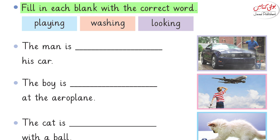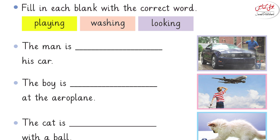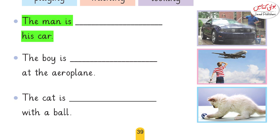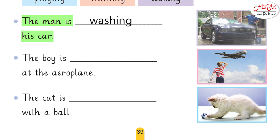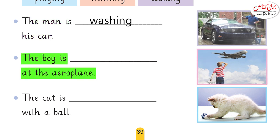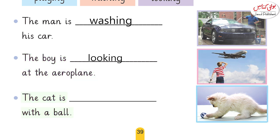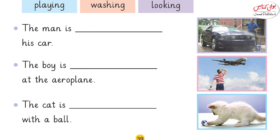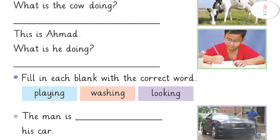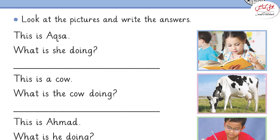Fill in each blank with the correct word. Hamare paas words hain: playing, washing, looking. Aapko tasveer dekh ke pata chal gaya hoga. The man is washing his car. Very good. The boy is looking at the aeroplane. Very good. The cat is playing with a ball. So aaj humne spaces mein words use karte hue sentences banai hain.